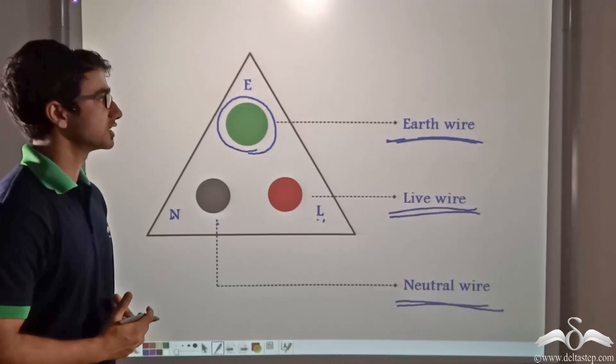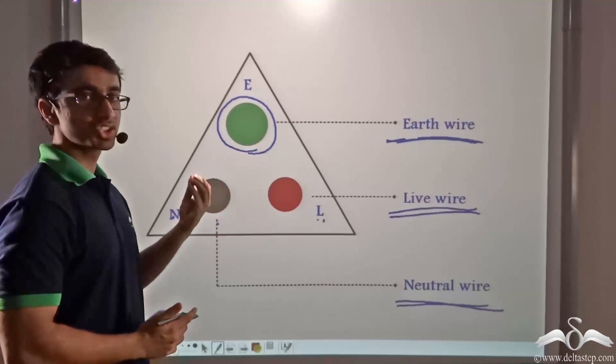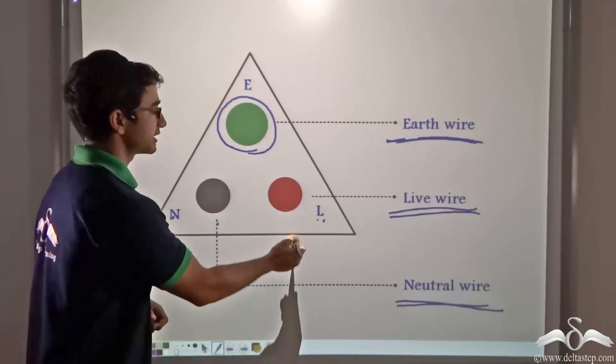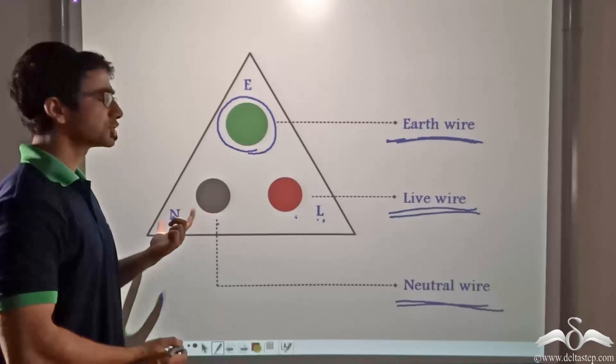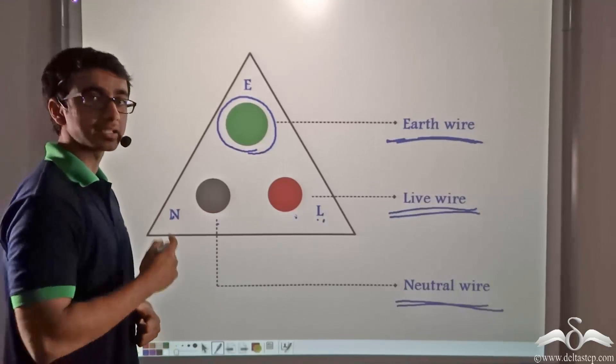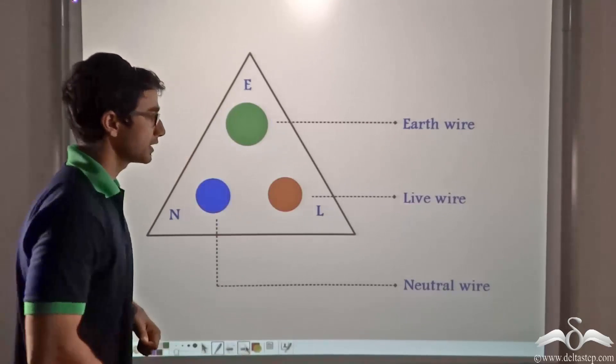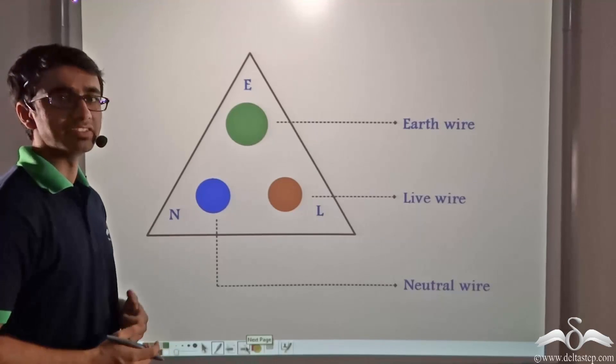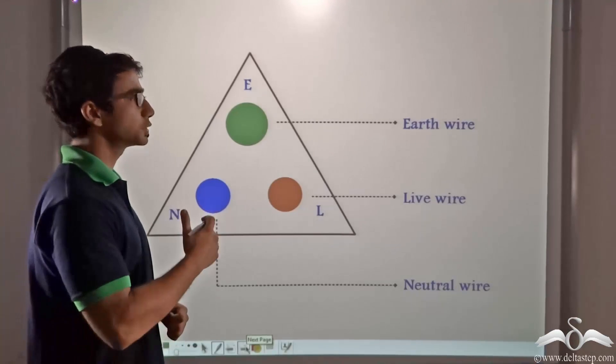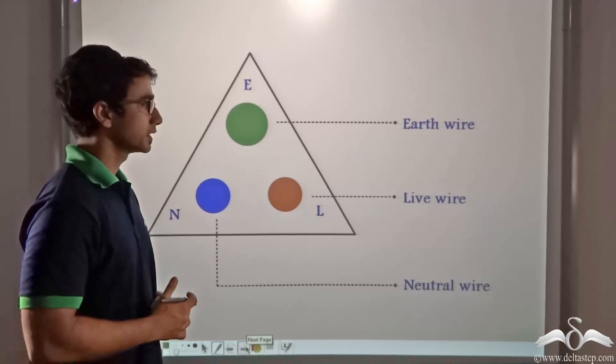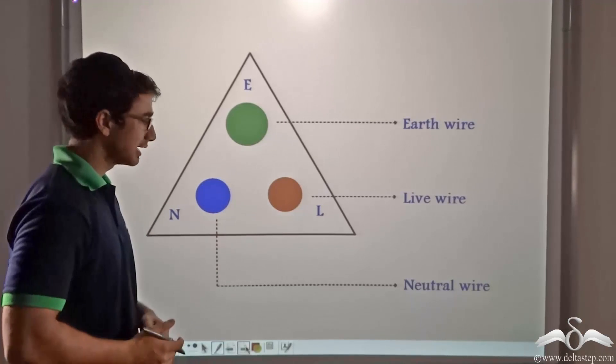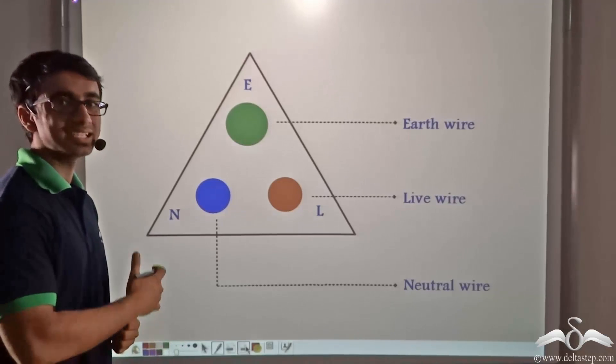Now according to the old convention, the earth wire or the earth socket is depicted in green, the live wire socket is depicted in red, and the neutral wire socket is depicted in black. But there has been a change in convention of late and the new convention is slightly different. Here the earth wire still remains green. However, the live wire is a light brown and the neutral wire is light blue.